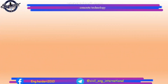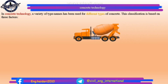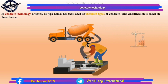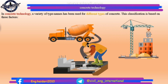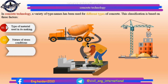In concrete technology, a variety of type names has been used for different types of concrete. This classification is based on three factors: 1. Type of material used in its making. 2. Nature of stress conditions. 3. And its density.